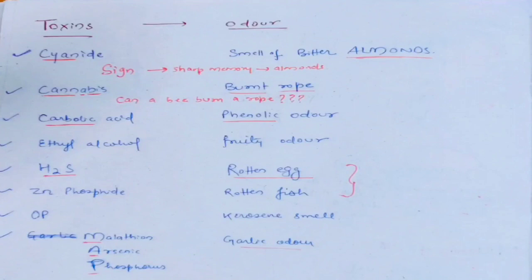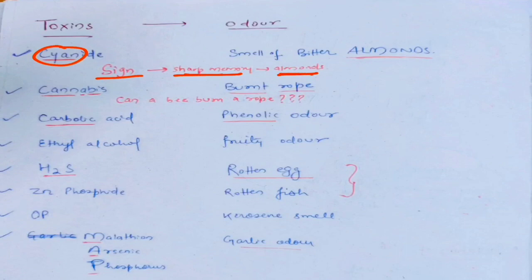You must have seen people who can fake a signature — almost any signature you give them, they can write it exactly. For that you need a sharp memory, and for that you need a lot of almonds. So correlate cyanide with 'sign,' sharp memory, and almonds. In cyanide poisoning, you see the smell of bitter almonds.